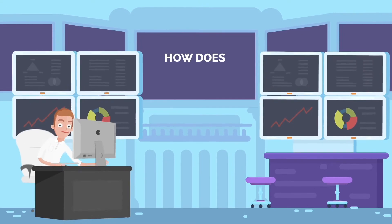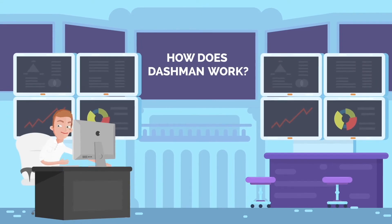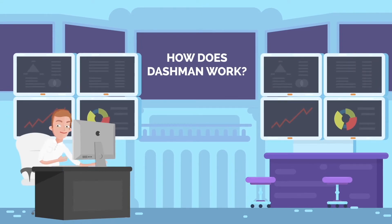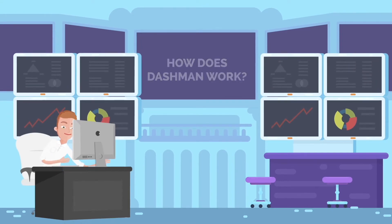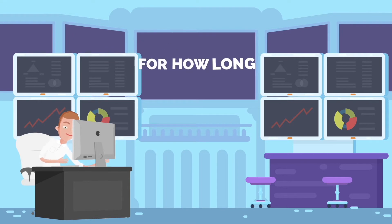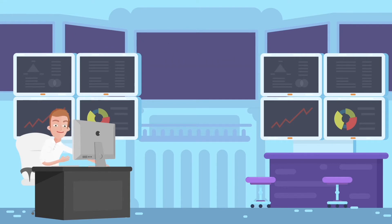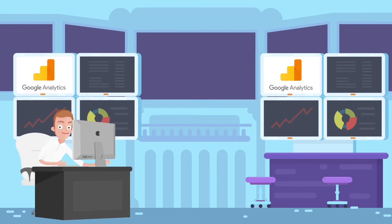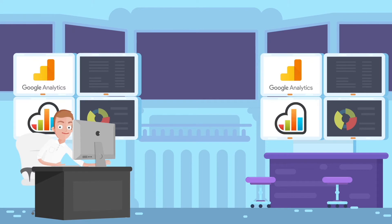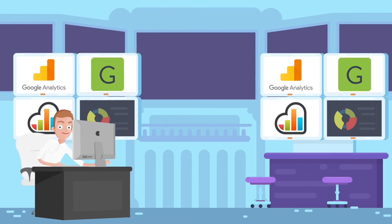This is how Dashman works. Using the desktop application, you choose which web pages to display, where, when, and for how long. For example, you could choose to display Google Analytics, Kissmetrics, Bearmetrics, GeckoBoard, Twitter, etc.